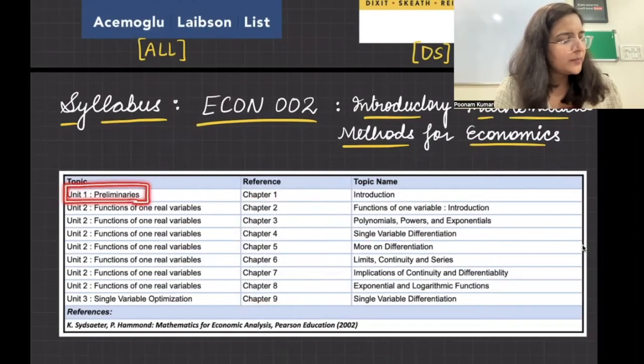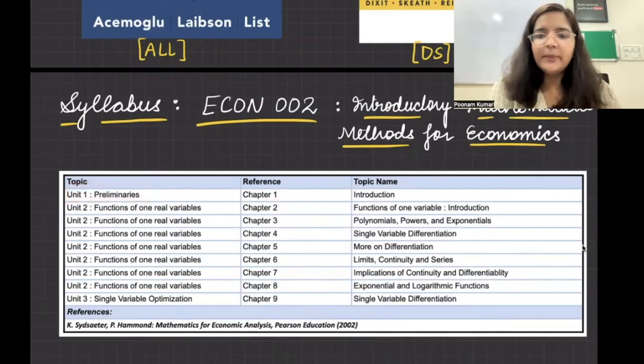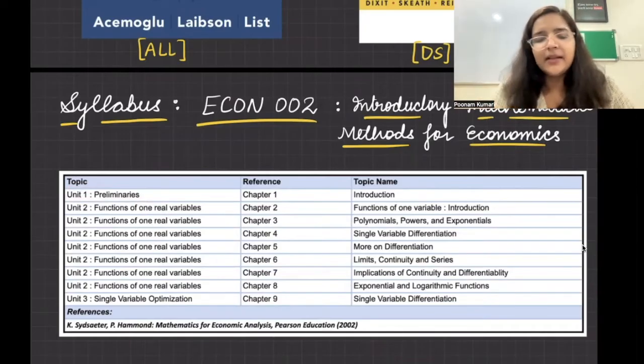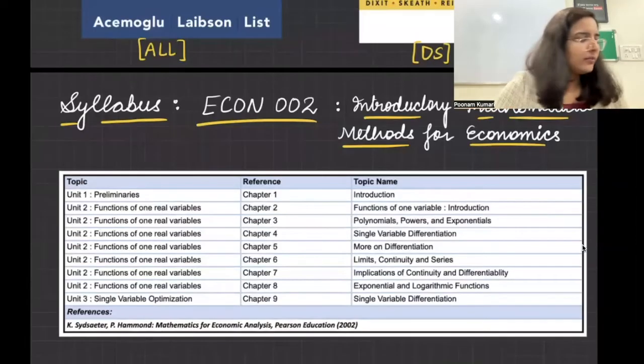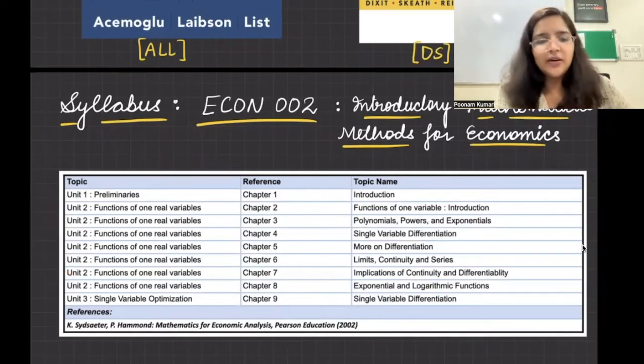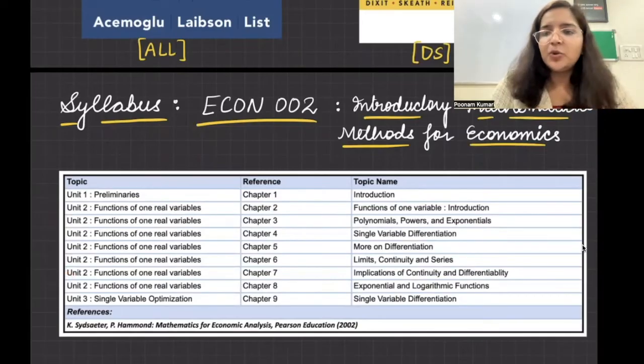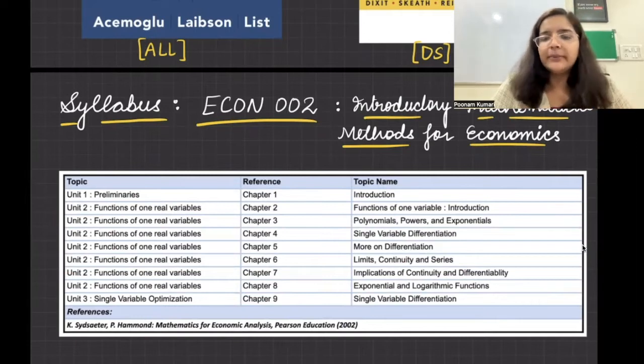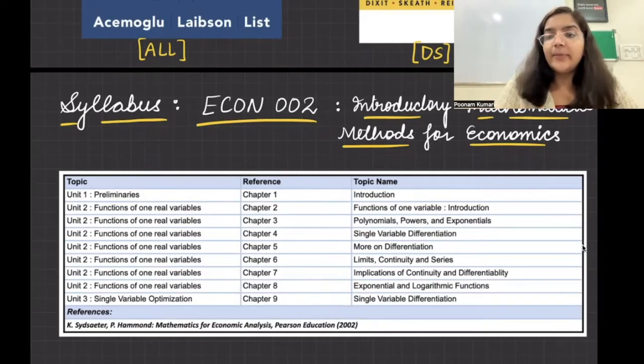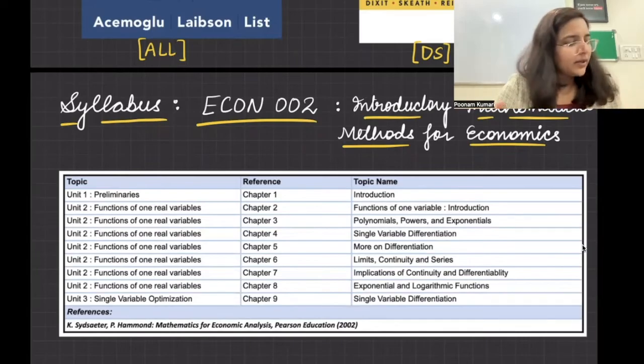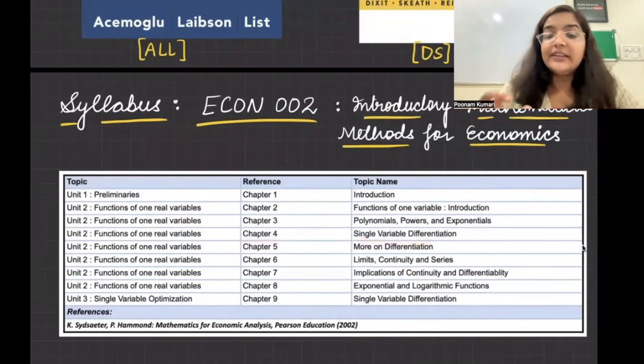What are the chapter topics going to be? So the first unit is going to be preliminaries, meaning starting basic topics. In introduction, logic, proof, basic things regarding sets, these will be in your discussion. And then from unit two, it's going to talk about functions of one real variable. So function of one variable will be elaborated, then polynomial functions, power functions, exponential functions. So different types of functions, their graphs, related properties, all that you have to learn.